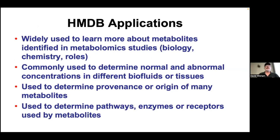People use HMDB to learn about metabolites because there are detailed descriptions about their biology, chemistry, and functional roles. It allows you to determine normal and abnormal concentrations for different tissues or biofluids, determine the origin of compounds (microbial, endogenous, or food), and understand their links to pathways, enzymes, and receptors. The idea is to consolidate all of this into a single resource rather than searching textbooks and many other references.